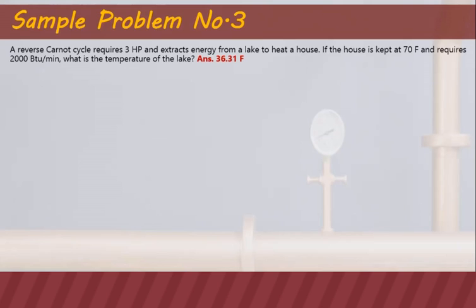This reverse Carnot cycle, which is a heat pump, uses 3 horsepower to keep the house at a high temperature of 70 degrees Fahrenheit, requiring 2,000 BTU per minute to maintain that condition. The temperature outside must be lower than inside, so we need to find the temperature of the lake. This scenario applies to countries experiencing snow or winter seasons.